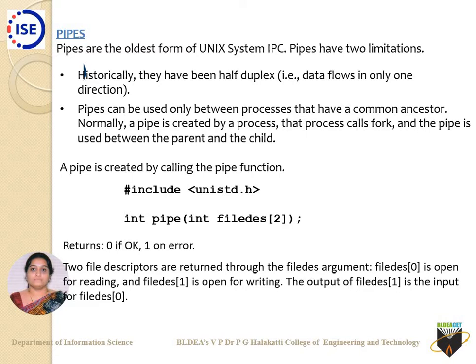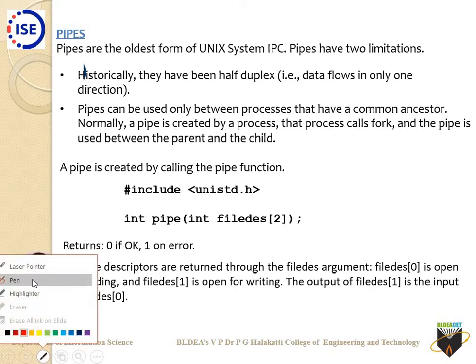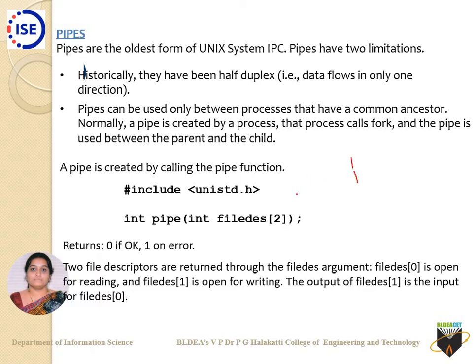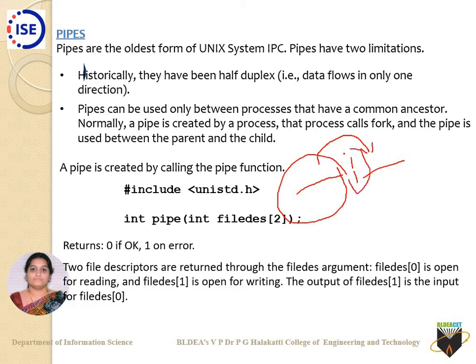We have already come across this pipe symbol in Unix and shell programming. This symbol is just above your Enter key and below the Backspace key. So if you use a command on the left and another command on the right, the pipeline takes the output of the left command and uses it as input for the right command — no intermediate file on disk is needed. The pipeline treats the left-hand side process as a reader and the right-hand side as a writer.